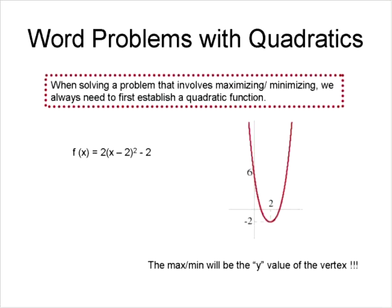If the question asks you to maximize or minimize, we always need to have a quadratic equation. That's the key. If you're asked for a maximum problem, you're going to be establishing a quadratic function. So here's a quadratic function that's established, here's the graph of the quadratic, and the minimum or the maximum is always going to be the vertex.